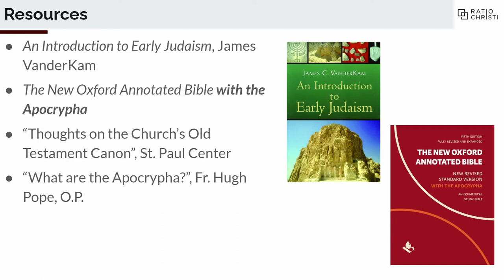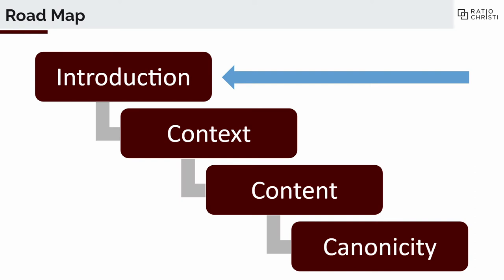Here are the resources I'll be referencing. The VanderKam book is super good — I'd recommend it. It's basically an introductory textbook focused on the apocryphal writings, including books like Enoch and Jubilees — apocrypha to the Hebrew Bible. I've relied on this source for most of the material. So if you want to dig deep into this topic, go pick up a copy of VanderKam. The New Oxford Annotated Bible is also excellent. Okay, so we've been through the introduction — a long introduction, but there's a lot of ground to clear.